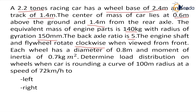The direction of rotation of the wheels and the direction of rotation of the rotating parts of the engine are both the same. The diameter of wheels is given as 0.8 meters, so the radius will be 0.4 meters. The moment of inertia of wheels is given as 0.7 kg·m². We have to determine the load distribution on the wheels when the car is taking a curve of 100 meter radius at a speed of 72 km/h, for both left and right turns.